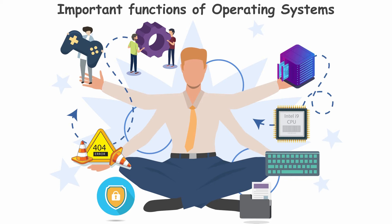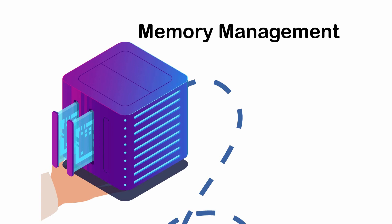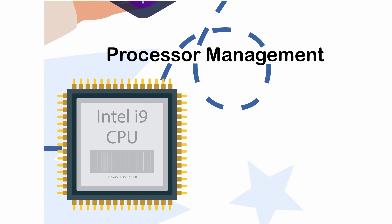The operating system manages all of this, so it is a resource allocator. Looking at the important functions of an operating system, we have listed eight main ones which we will go through in upcoming videos. First is memory management — it keeps track of how much memory is available, how much has been consumed, and which process has taken how much memory. Second is processor management — it catalogues which processes are being executed, their needs, and what they require.